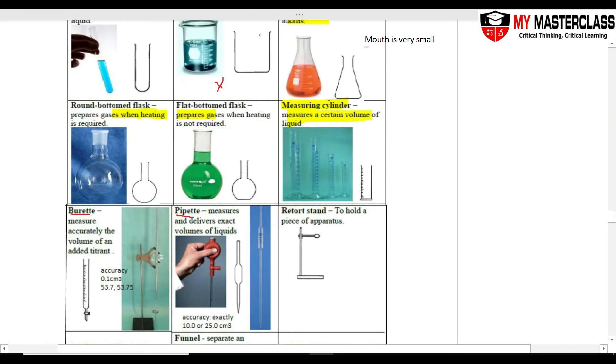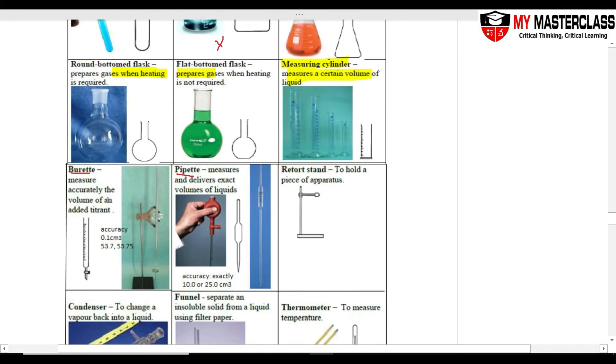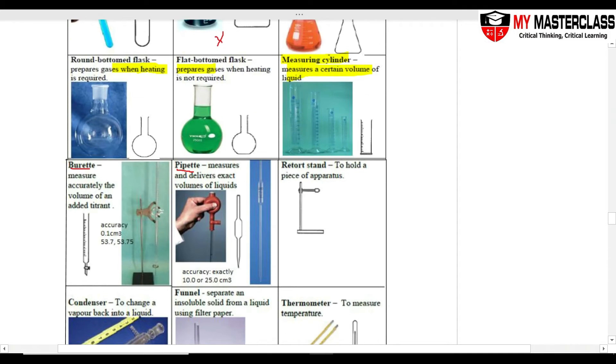Measuring cylinder is not as accurate as the buret or the pipette. So if you want, use the buret, buret is this long equipment over here. And this accuracy is up to 0.1. So I can measure 53.7, 53.75, very accurate up to two decimal places.